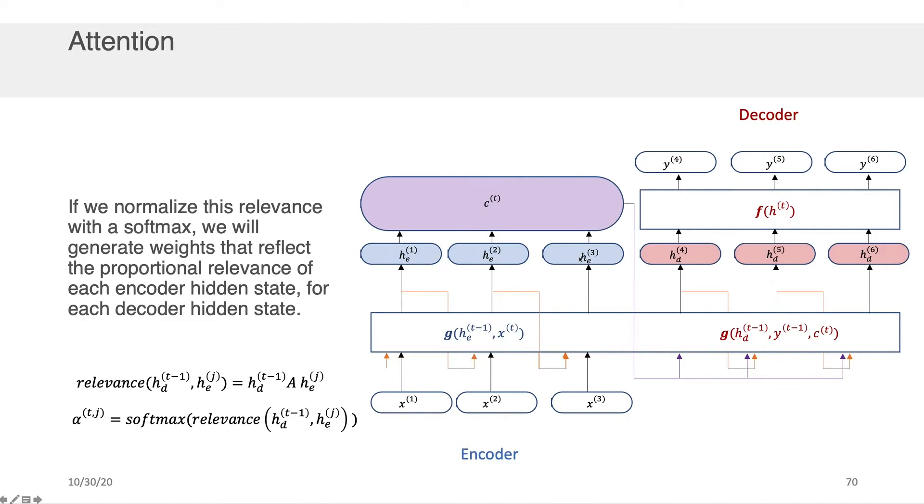So if I had that and I normalized it so that the values reflected the proportional relevance of each of the encoder's hidden states to each of the normalized vector that says how important was this one, how important was this one, and how important was this one, they all sum to one.